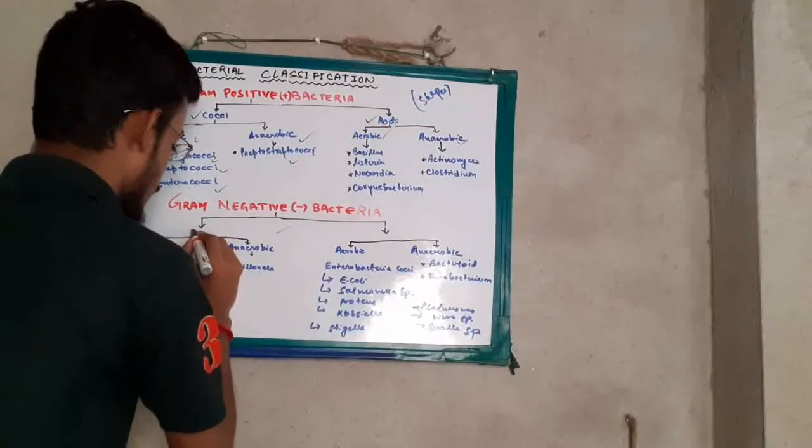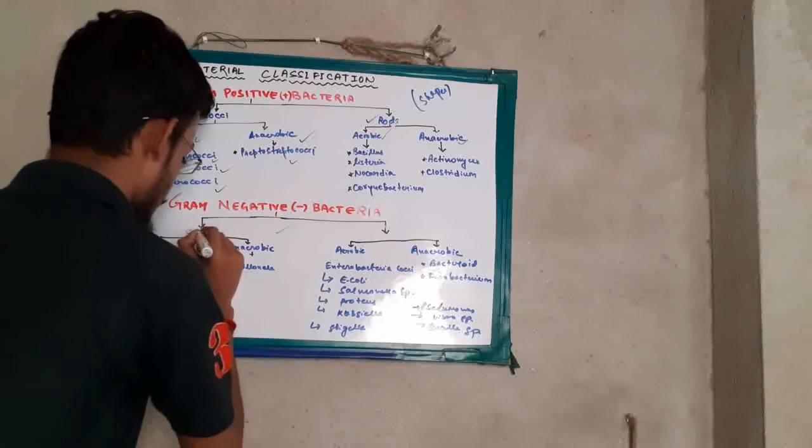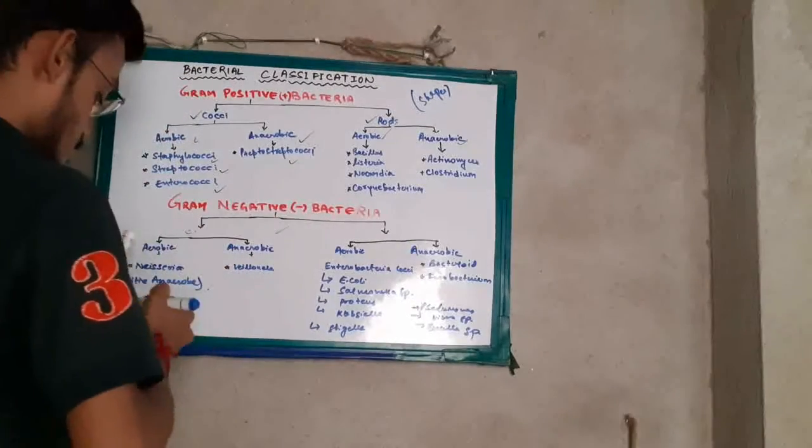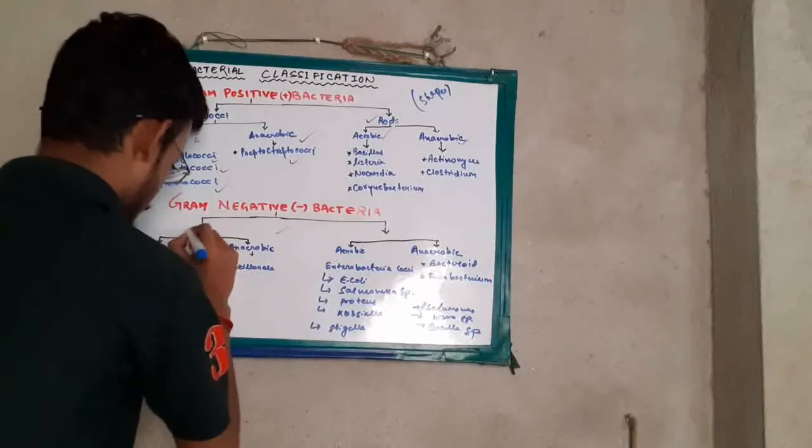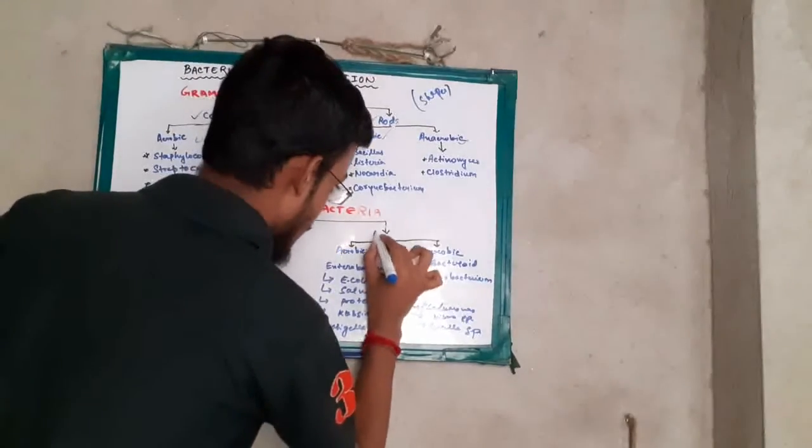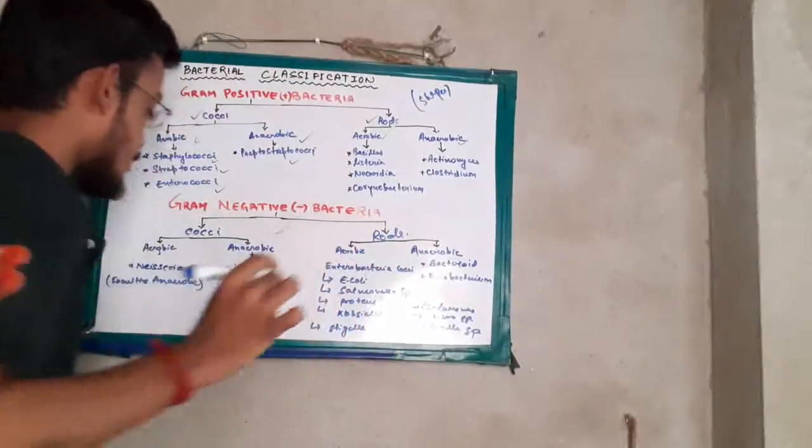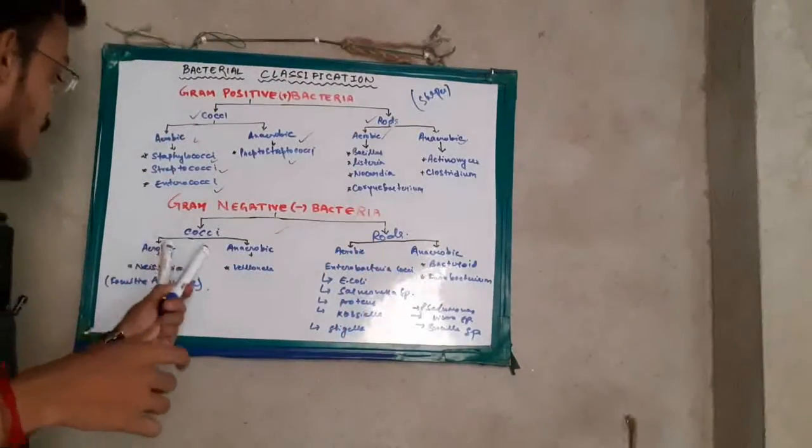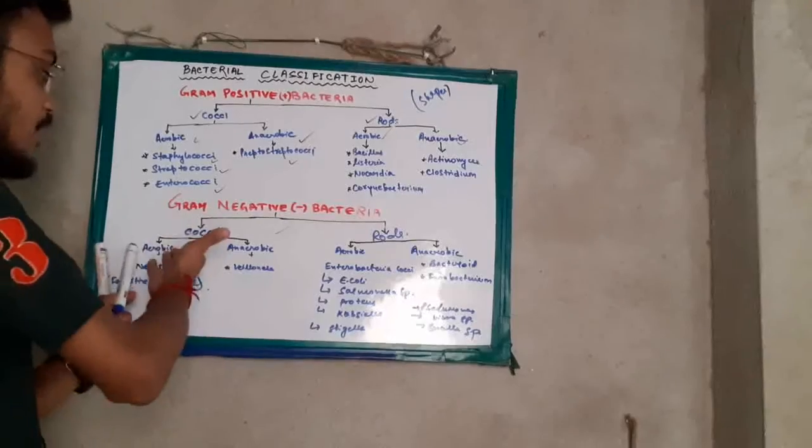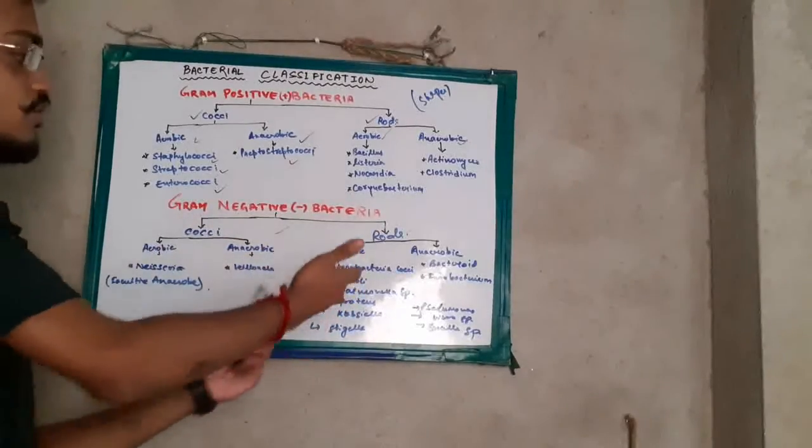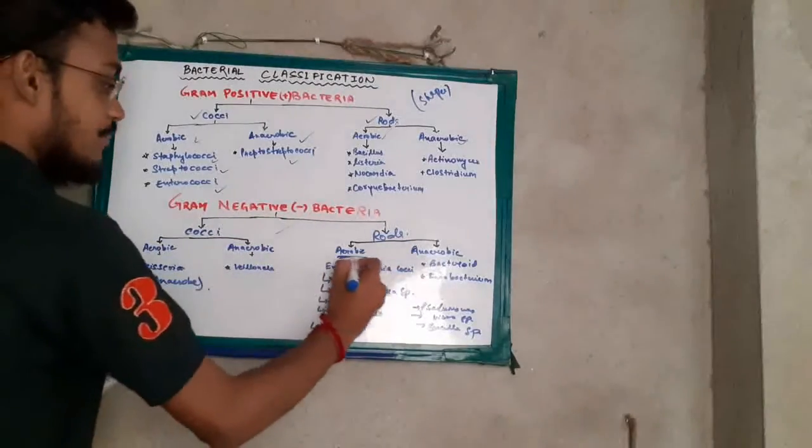It's cocci and rods. In cocci we have same aerobic and anaerobic. In rods also the same, aerobic and anaerobic.